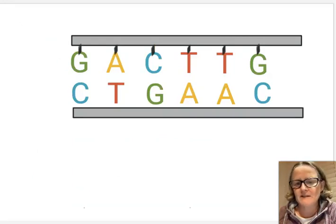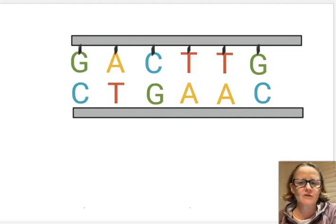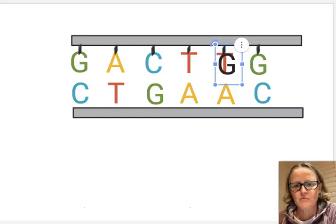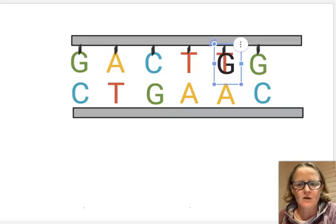But what happens if there is a mutation? That means there's a change in the DNA. If there's been a change in one of these bases, what might be the consequences? Let's assume for a moment that instead of that T, we've had a zap of radiation perhaps, and the T base has changed into a G base.